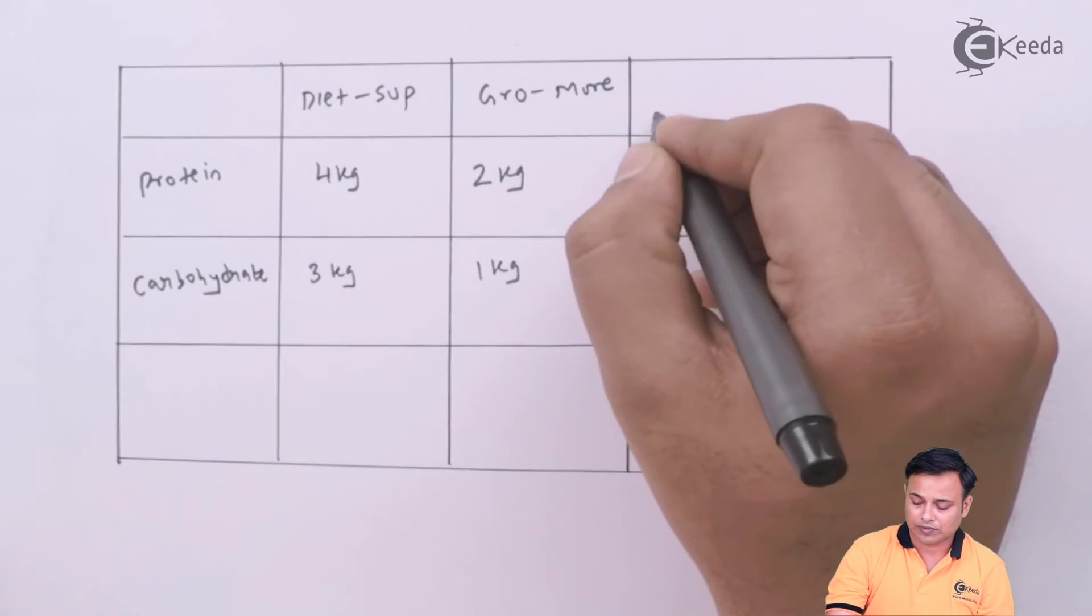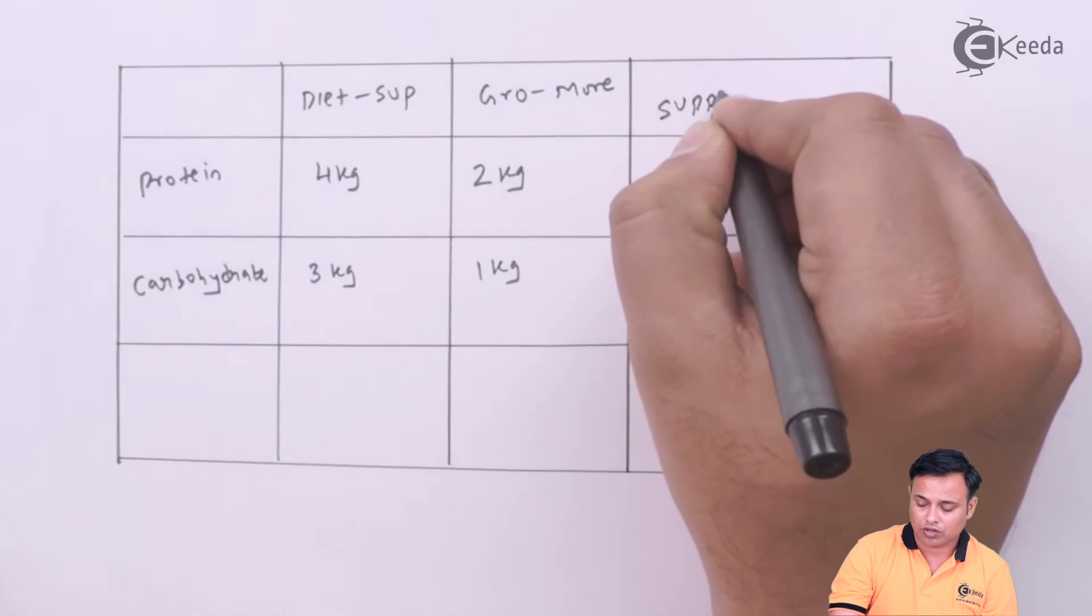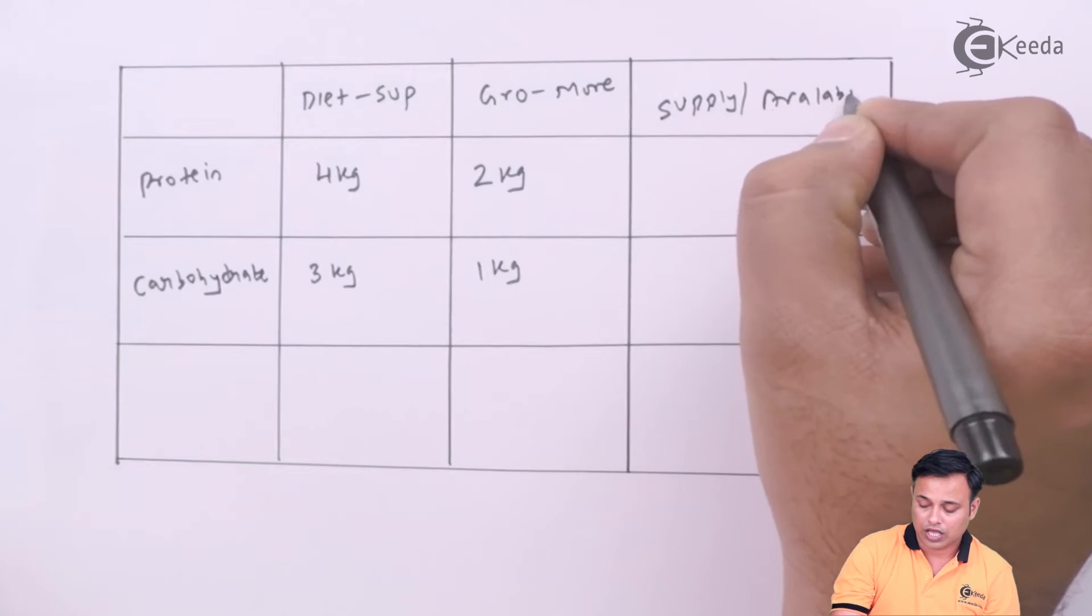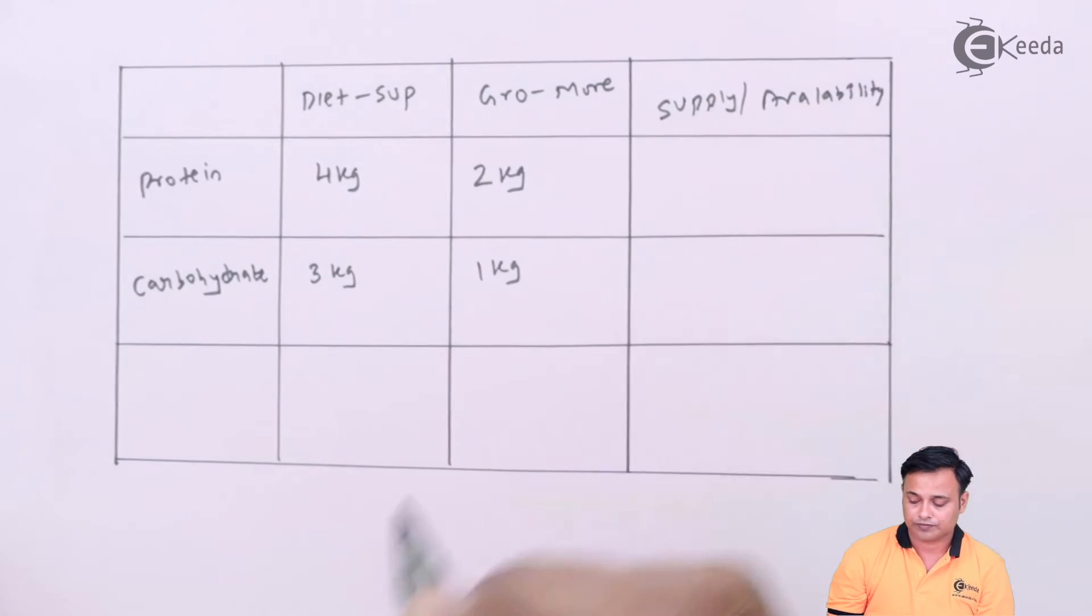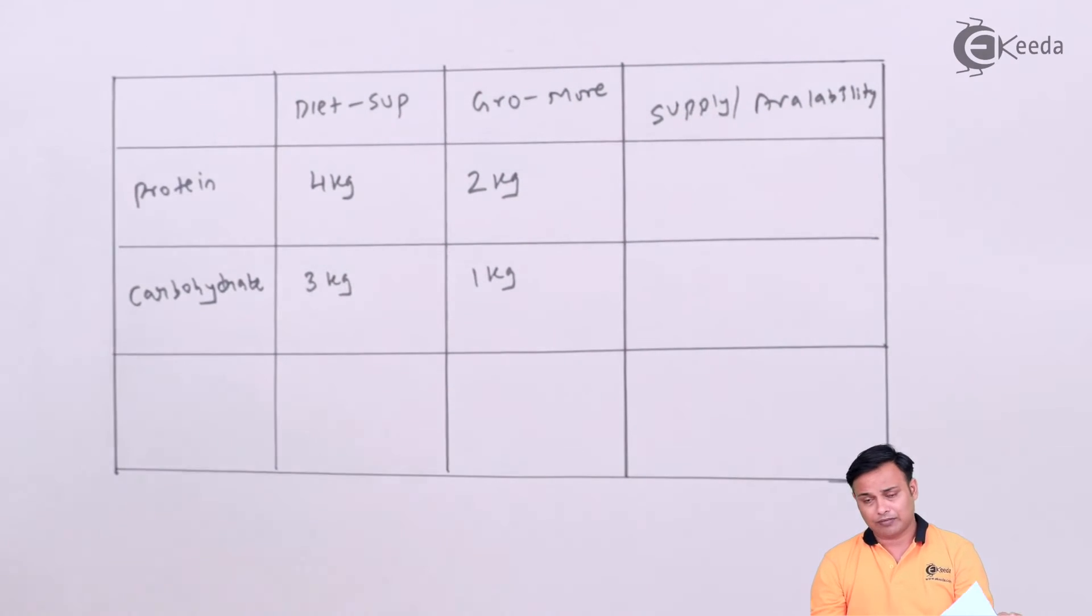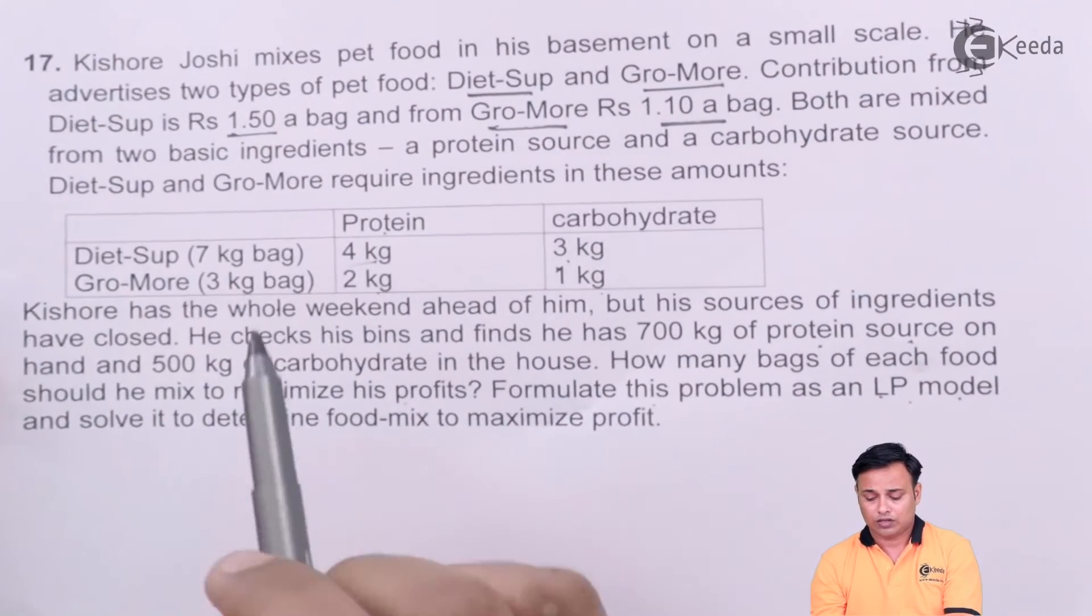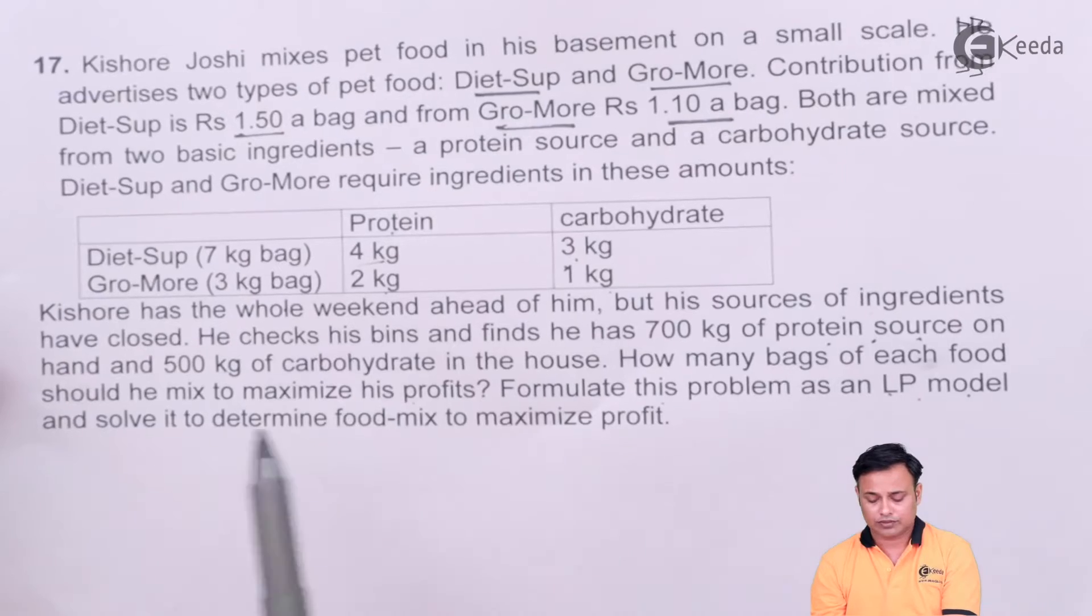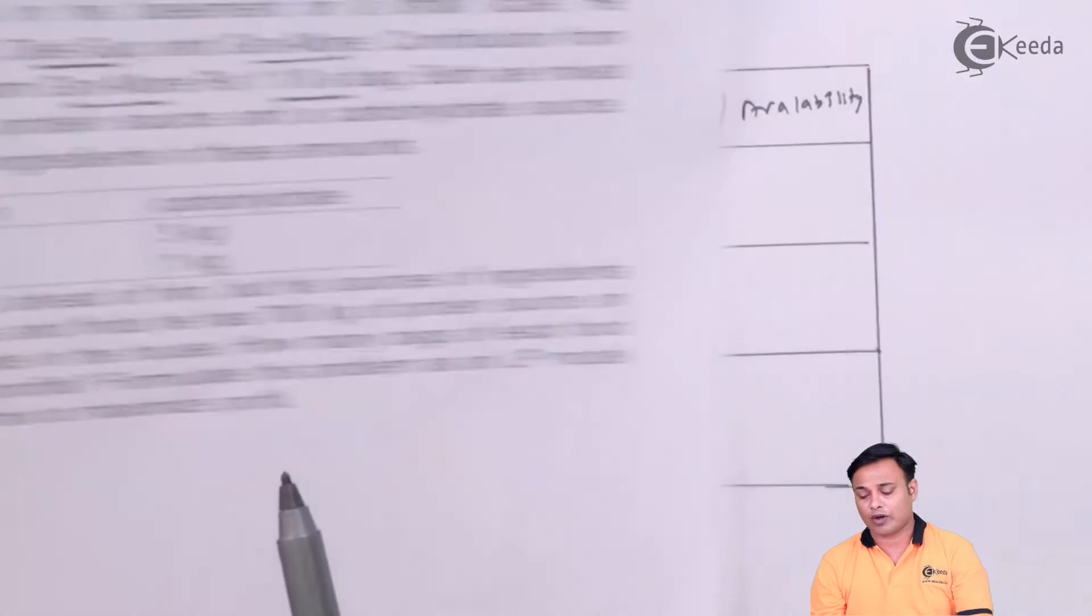And then we have the supply here or I can call it as the availability. How much quantity is available? I have 700 kg of protein and 500 kg of carbohydrates.